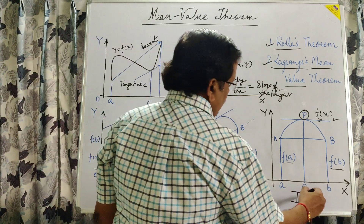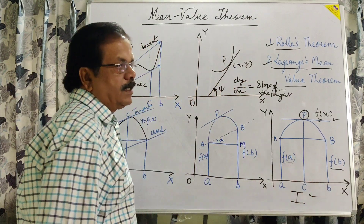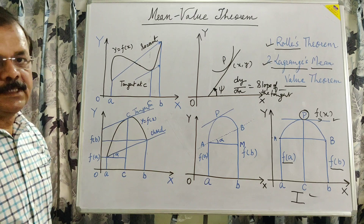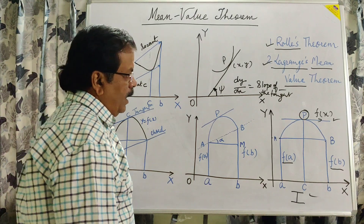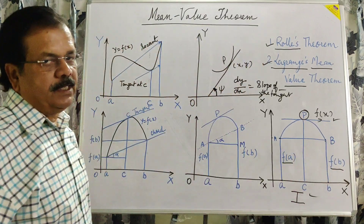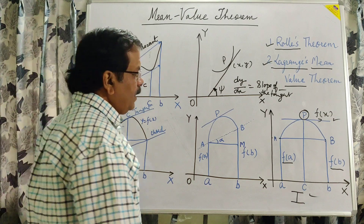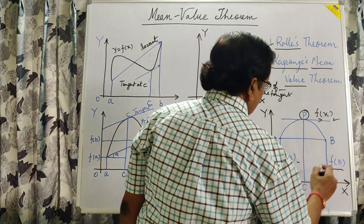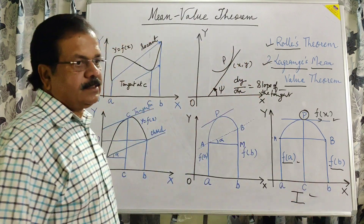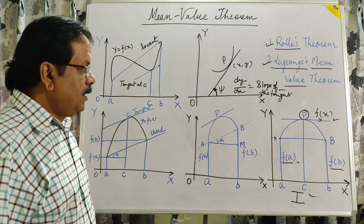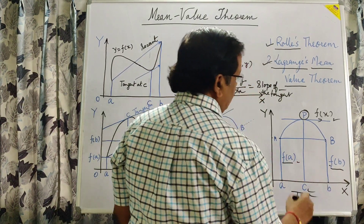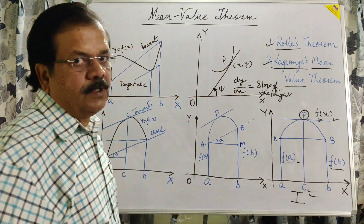Rolle states that if a curve is continuous in the closed interval and derivable in the open interval [a, b], and f(a) is equal to f(b), then there exists at least one point c where f'(c) is equal to 0.